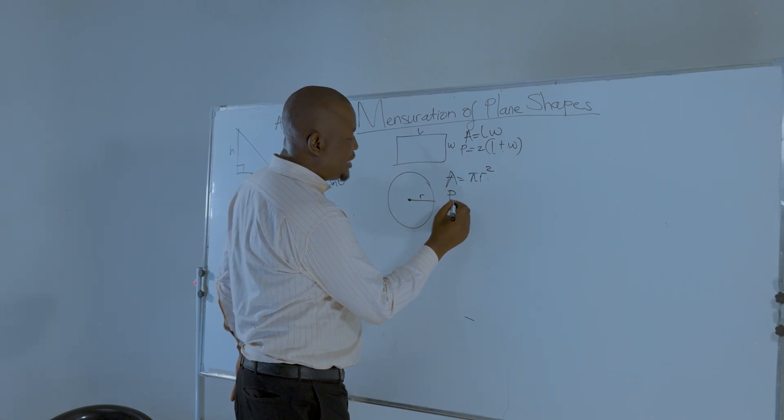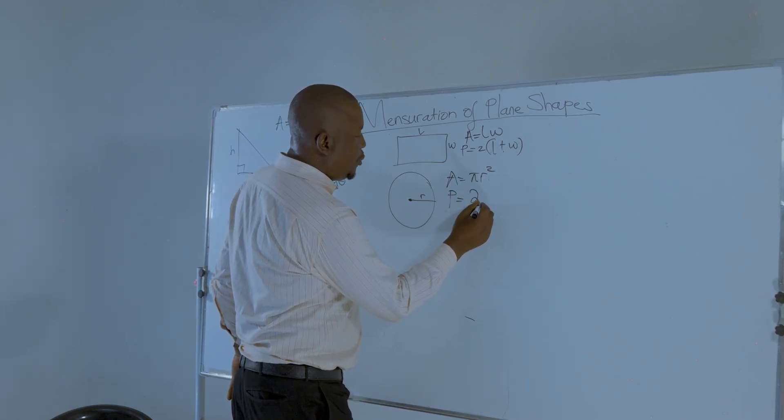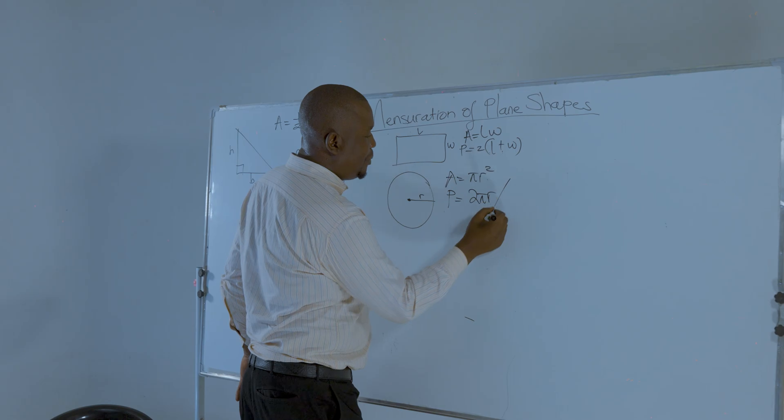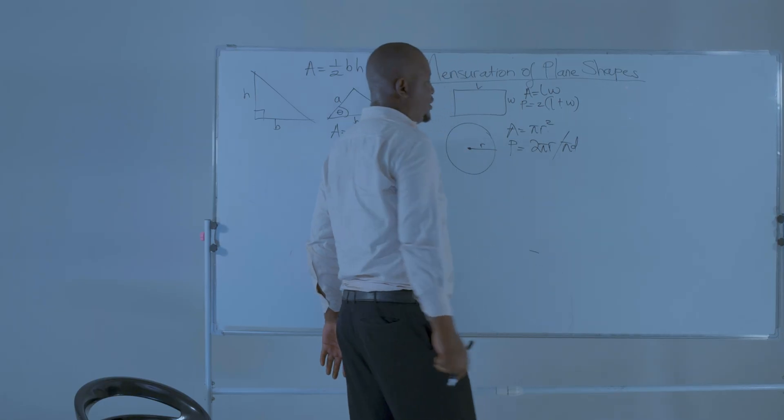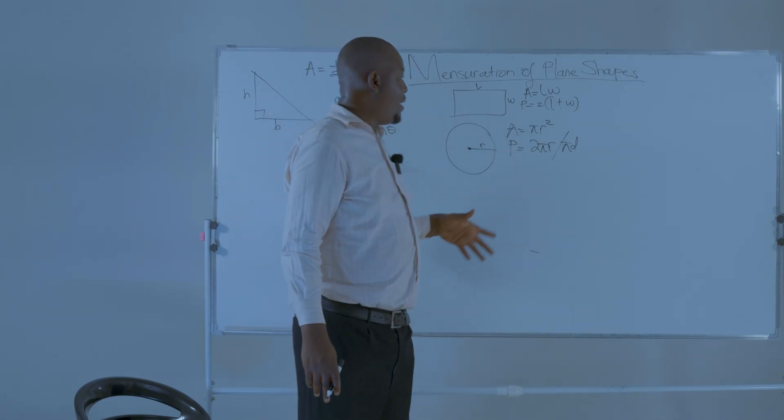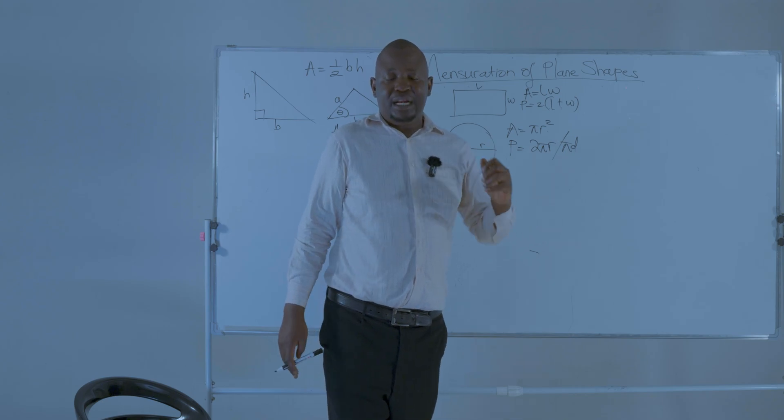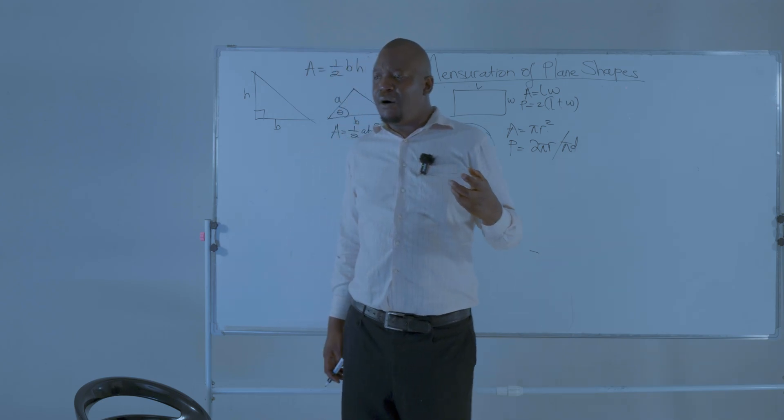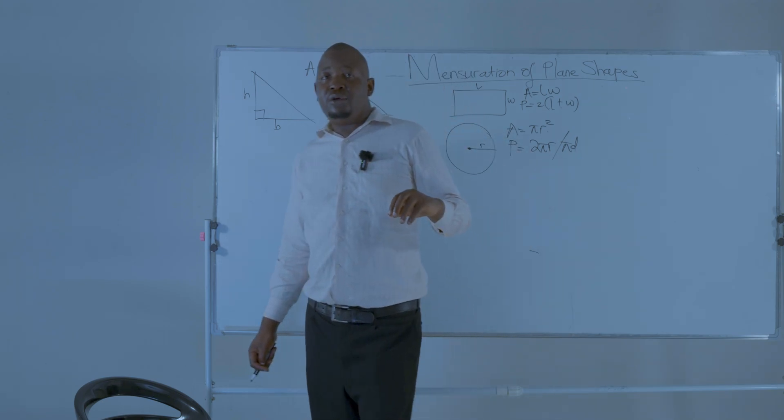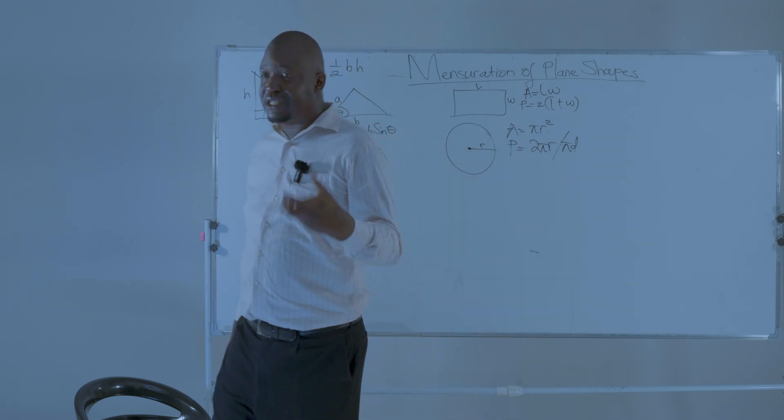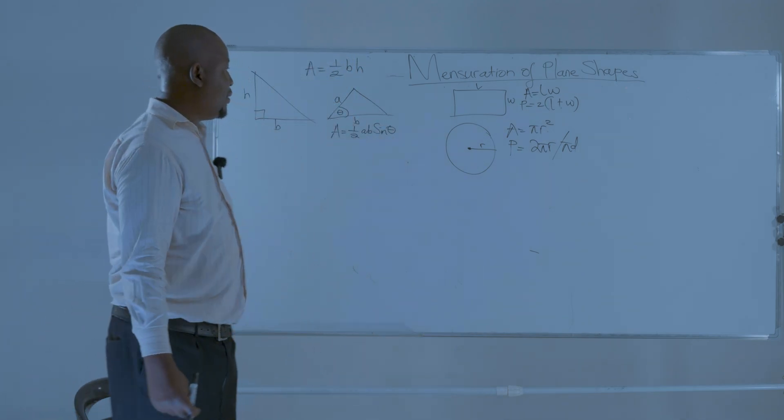Then the perimeter of a circle is given by 2 pi r or simply pi diameter. So if you take pi multiplied by the diameter, you get the perimeter. When it comes to questions of the circle, you are given the value of pi that you are supposed to use in any particular question.